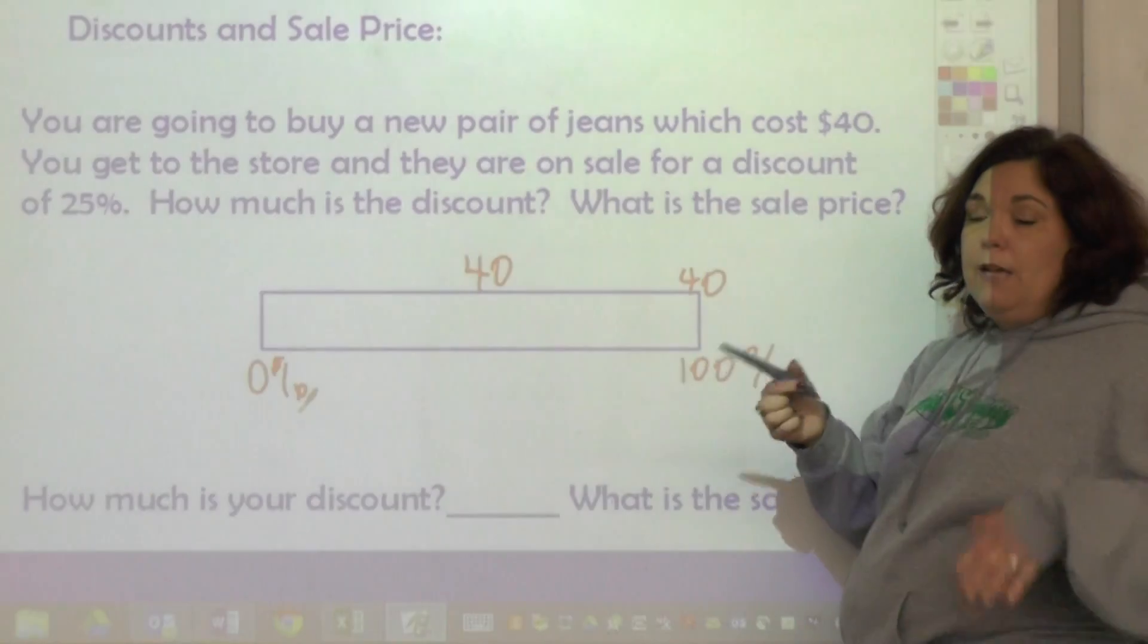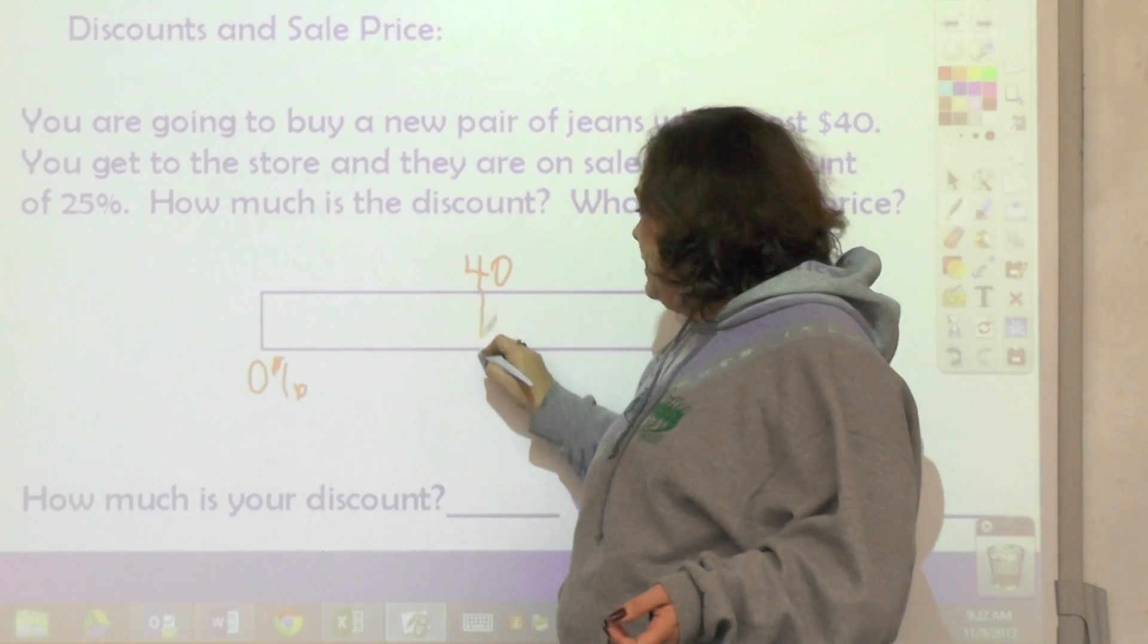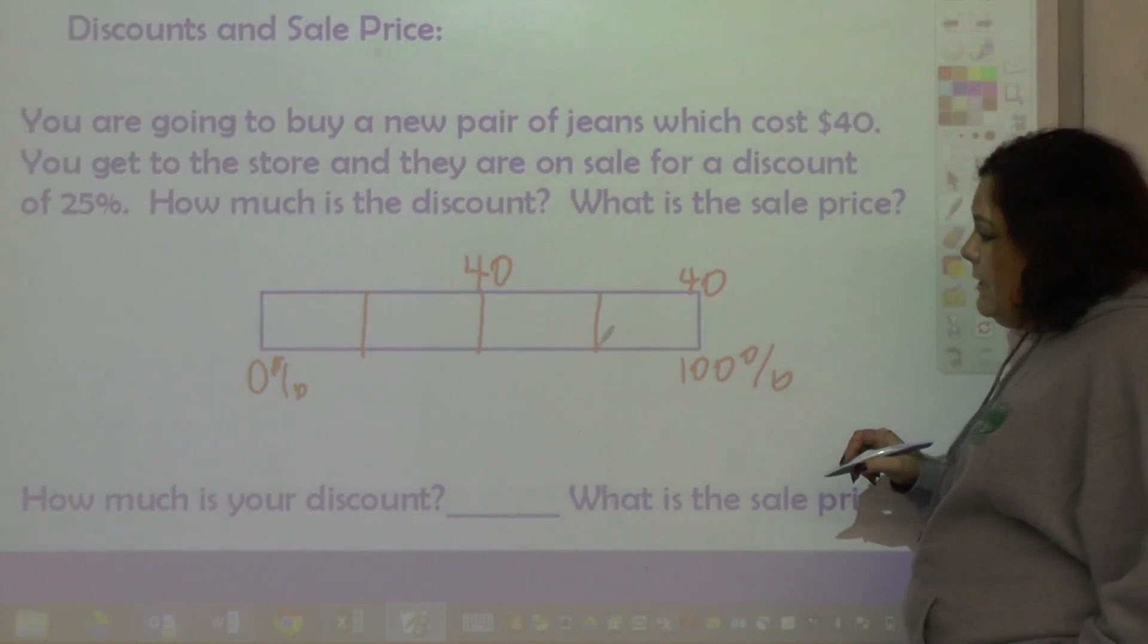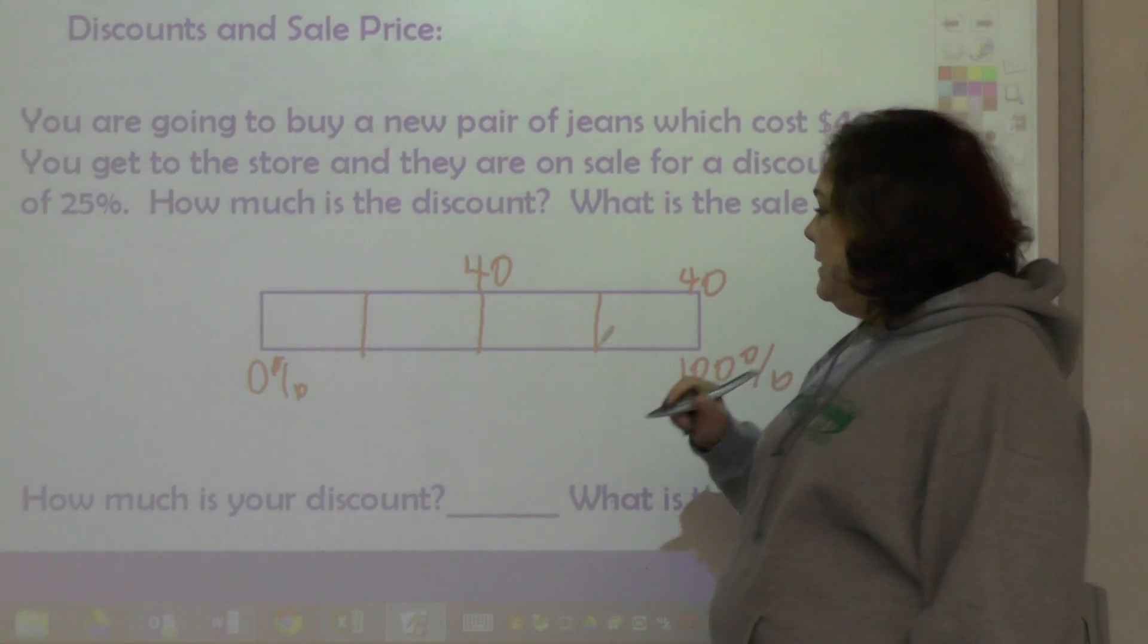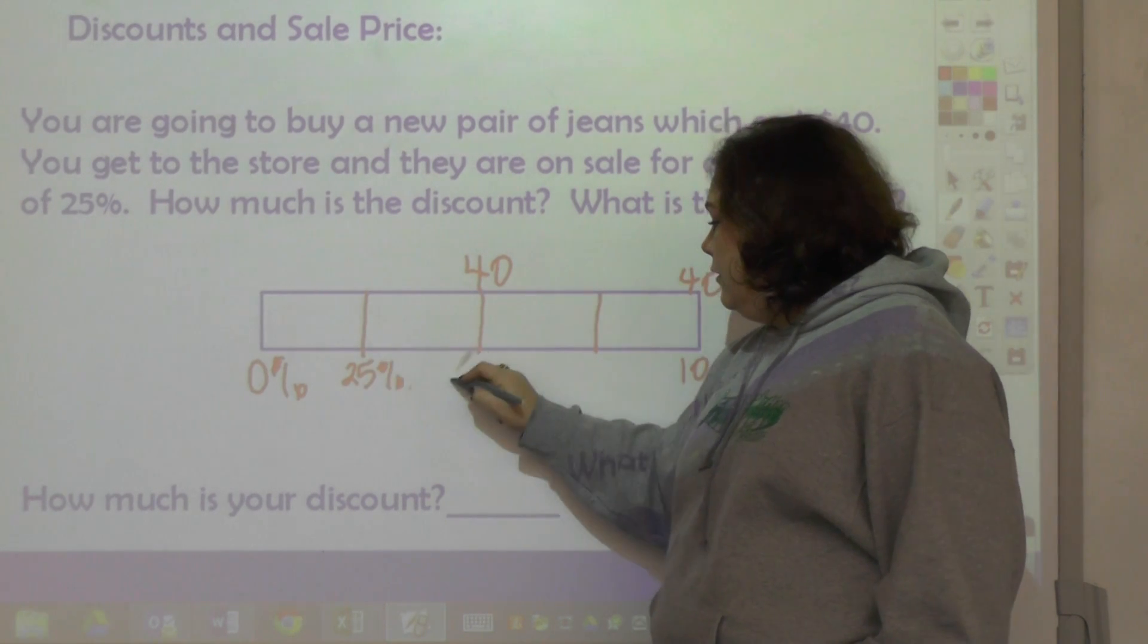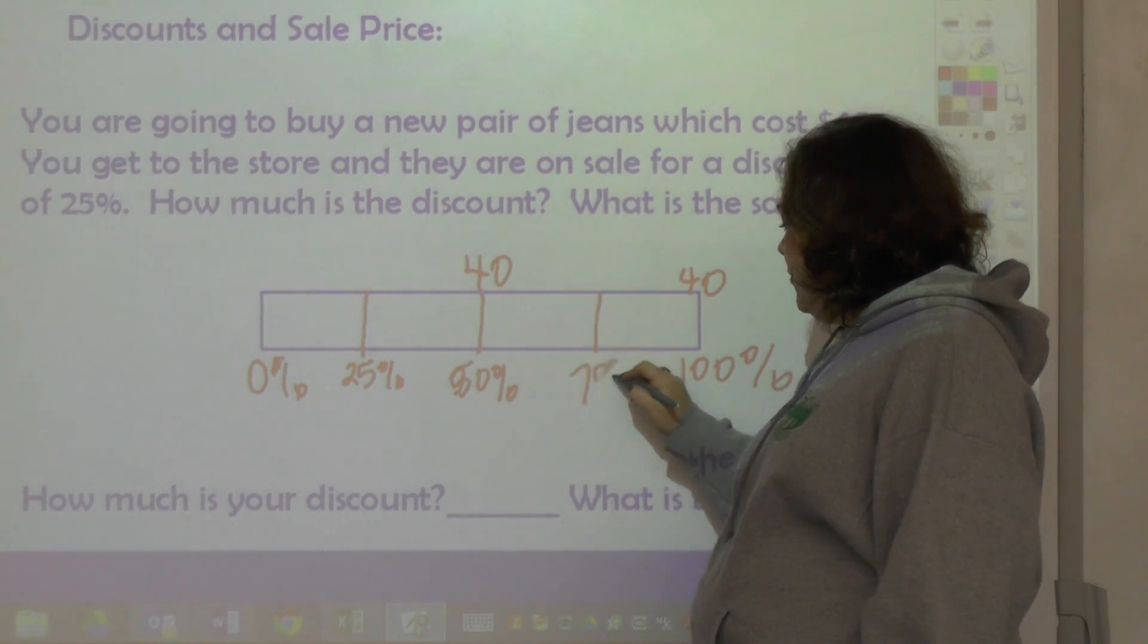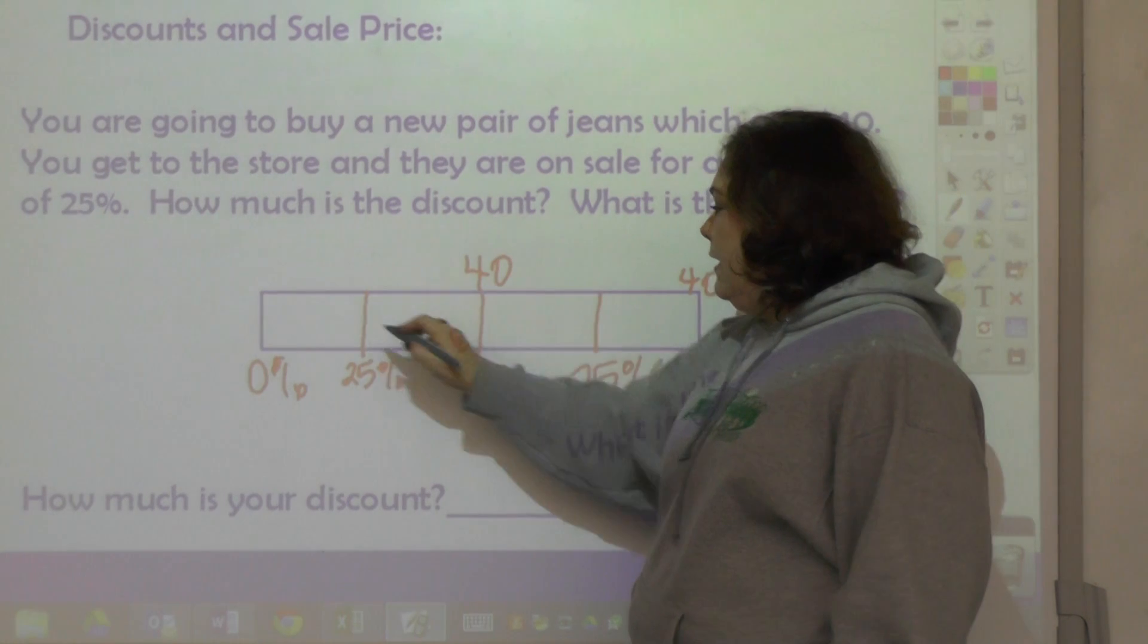And it says you get to the store and they are on sale for a discount of 25%. Well, 25% is equal to one-fourth, so we need to separate this into fourths. And how much is the discount, and then what is the sale price? So basically this is 25%, 50%, 75%, and 40 divided into four is 10.